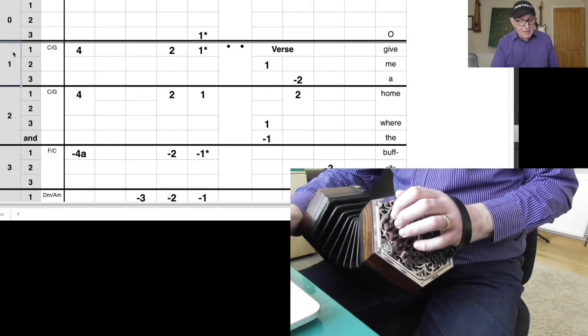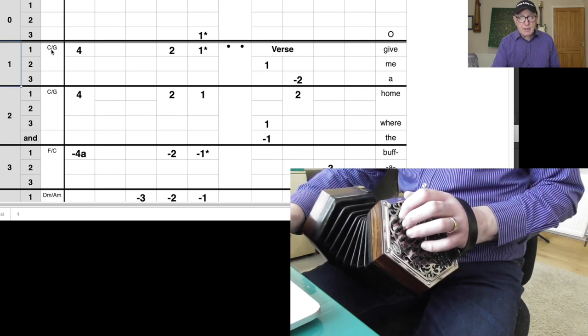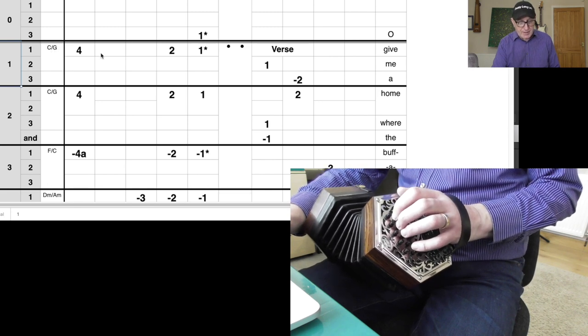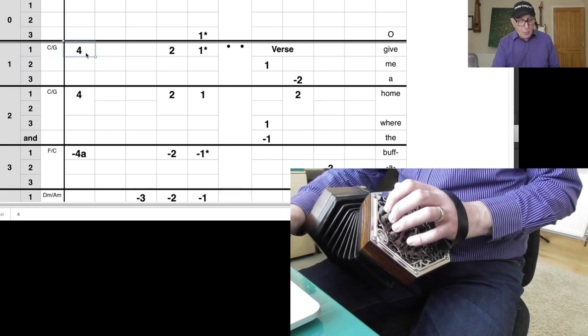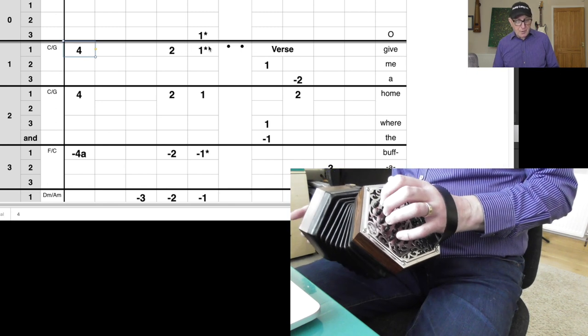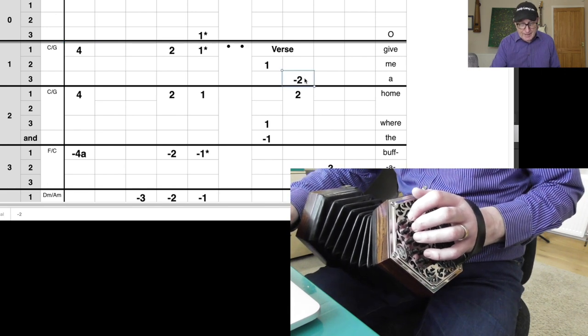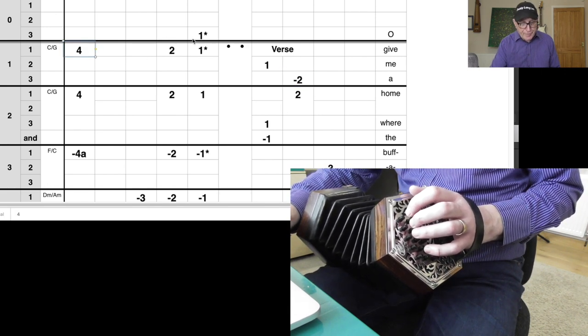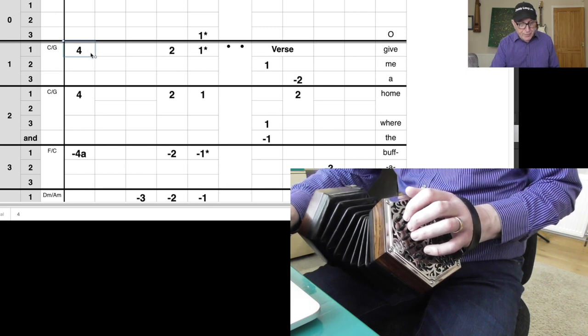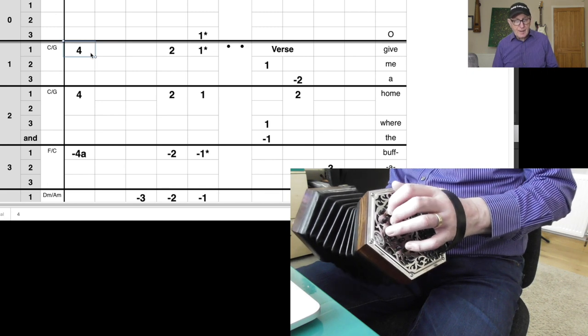So in the first full bar, which is bar one, if you're playing a CG instrument you're playing a C chord, and if you're playing a GD instrument it's a G chord. And how do we do that on the left hand side? Well, we have button one, button four, button five, all on the push. If it's on the pull I put a minus sign, like here you see. So these are on the push, like our first note was. So buttons one, four, and five, fingers four, two, and one. And you push in, and that top note is part of your tune.